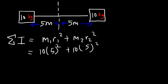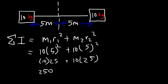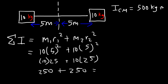5 squared is 25, and 10 times 25 is 250. So 250 plus 250 is 500. The inertia of the system when the axis of rotation is at the center of mass is 500 kilogram times square meters.